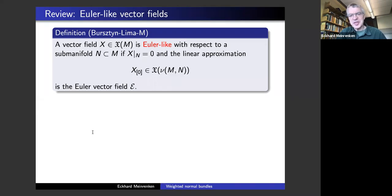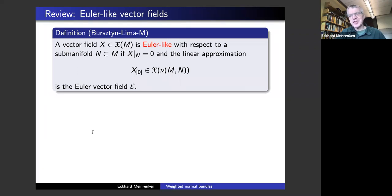I'm going to go back to these Euler-like vector fields that Rea briefly mentioned in his talk. This was from a paper of Enrique Burstein, Hudson Lima, and myself, and we gave this definition of an Euler-like vector field. Suppose you have a sub-manifold of a manifold and you have a vector field vanishing along that sub-manifold. Then you get a vector field on the normal bundle to the sub-manifold, which we call the linear approximation.